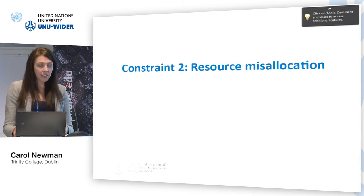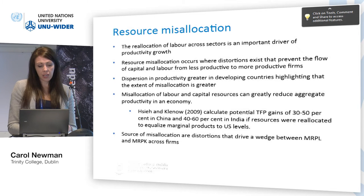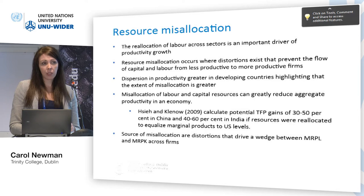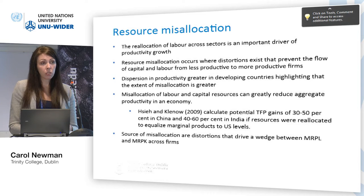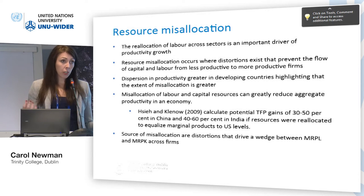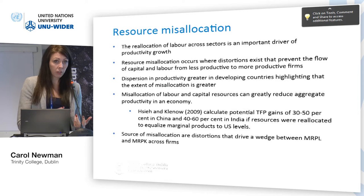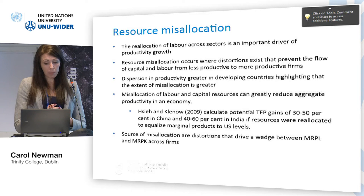The second thing I want to speak about briefly — pointing to some of the trade-offs Andy was talking about — is resource misallocation. It's an old issue, but there is a huge gap in our understanding of the extent of resource misallocation in developing countries. The reallocation of labor across sectors is an important driver of productivity growth, but there is a lot of evidence for significant resource misallocations within sectors across firms. This is where distortions in the economy prevent the flow of capital and labor from less productive to more productive firms, evidenced by the huge dispersion in productivity levels among firms in developing countries.